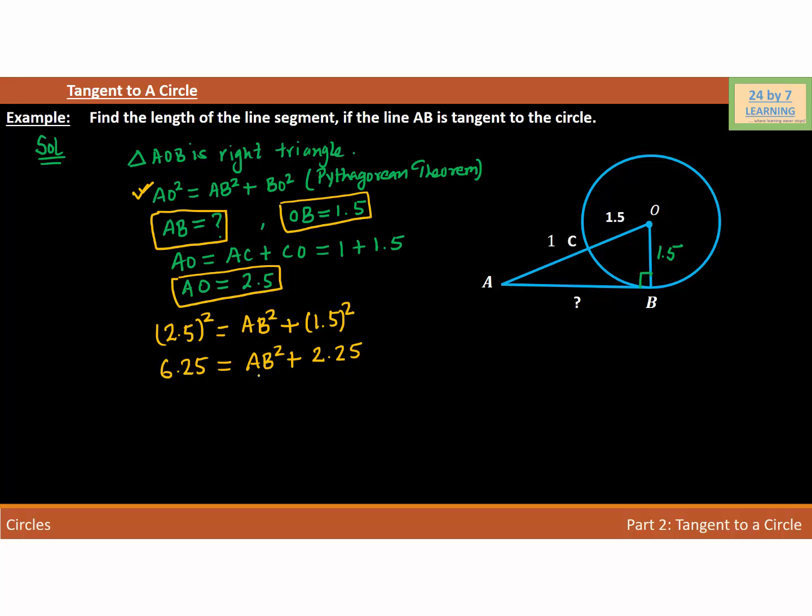In order to find the value of AB², I'm going to subtract 2.25 from both sides. This will be canceled out, and 6.25 - 2.25 is basically 4, and that equals AB².